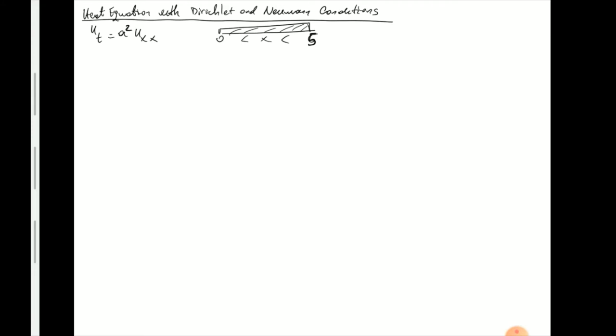So the length of the road is 5. Dirichlet conditions means that we have specified values at the boundary points, and in this case we still deal with homogeneous conditions. So let's say the initial temperature distribution u(x,0) equals x, because it gives me eventually the easiest series to deal with in the table. The boundary conditions are u(0,t) equals u(5,t) equals zero. So these are the so-called Dirichlet conditions.